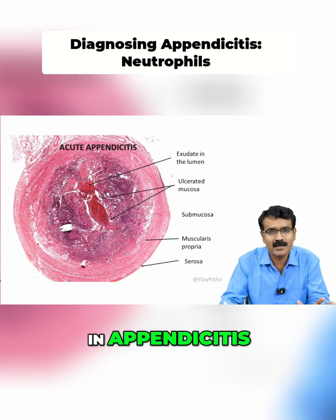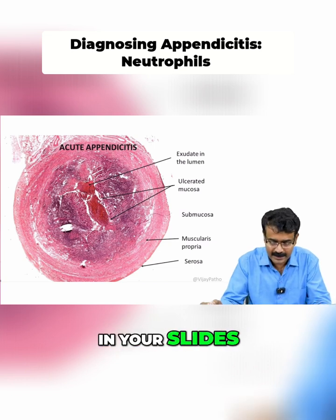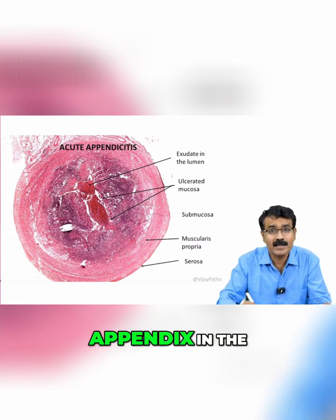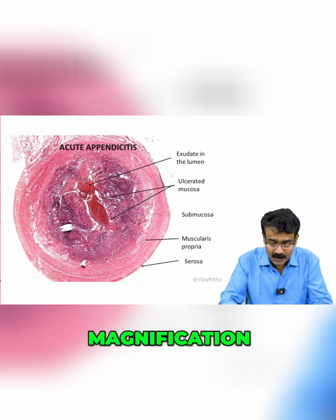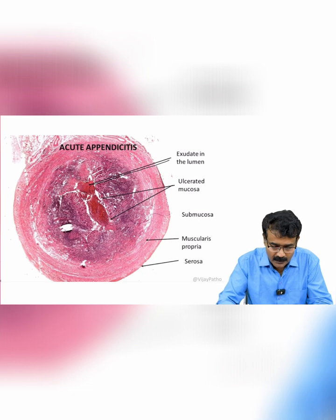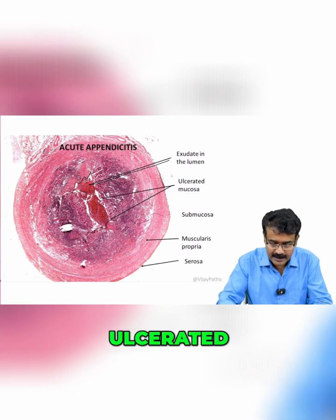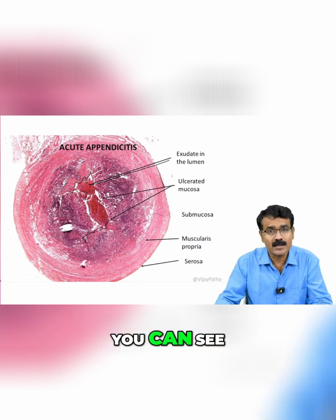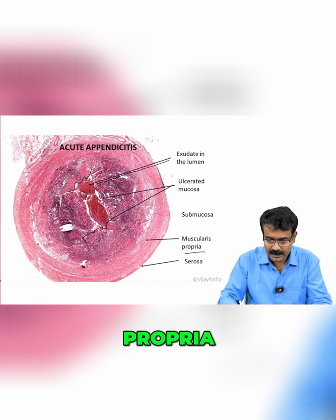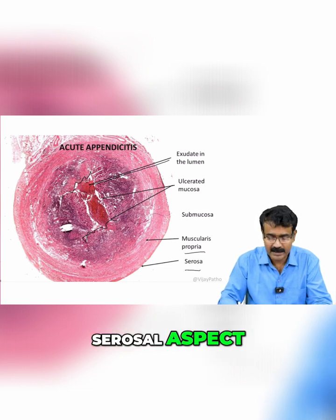What do you see in appendicitis in your slides? You can make out the entire section of appendix in the scanner magnification. You can see the exudate in the lumen. The mucosa is ulcerated — that is the ulcerated mucosa you can see. You can even see the submucosa in this magnification; that is the muscularis propria, and that is the serosal aspect.